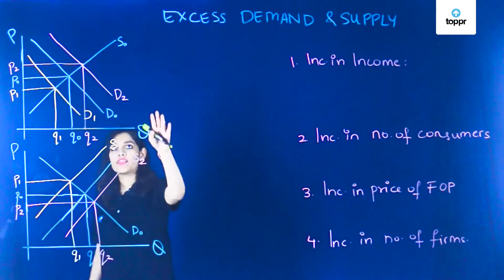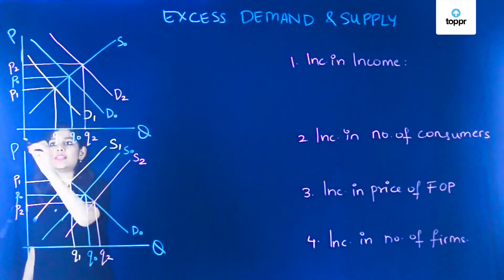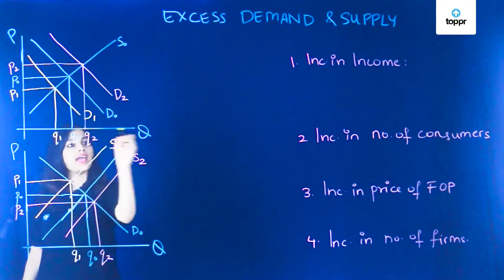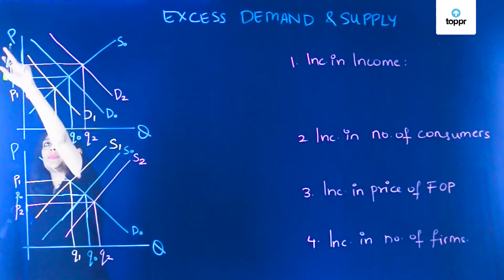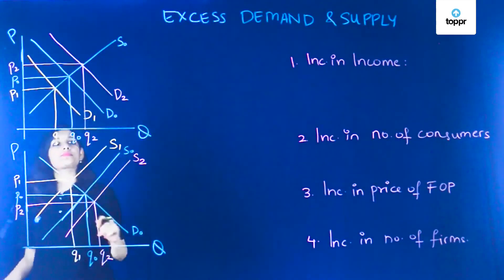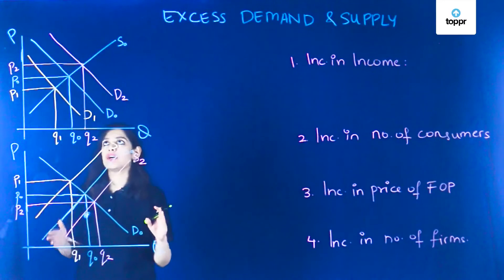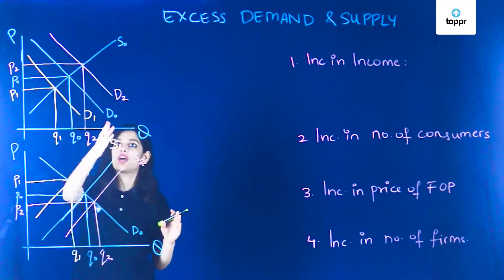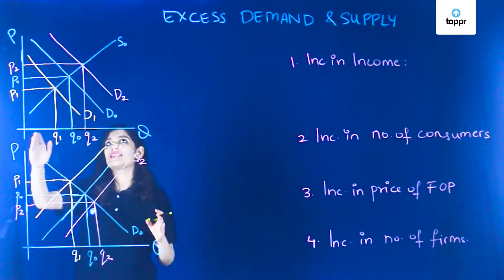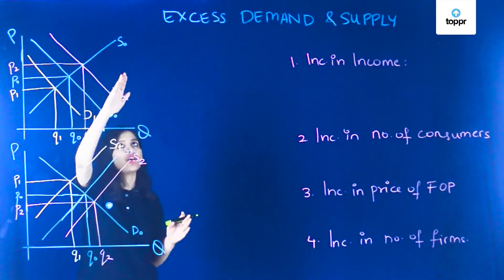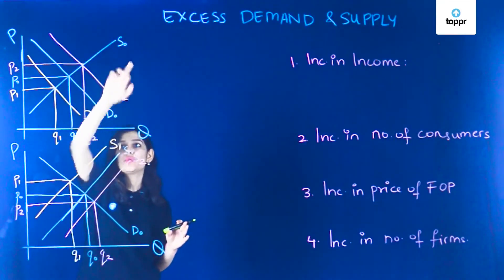Let's talk about this figure first. In this diagram the x-axis has quantity and the y-axis has price. The original demand curve is downward sloping, named D0, and the supply curve is upward sloping, named S0.